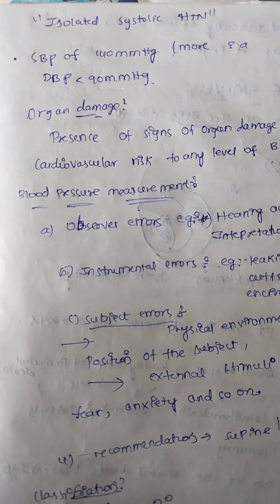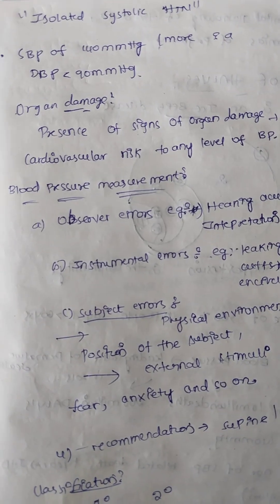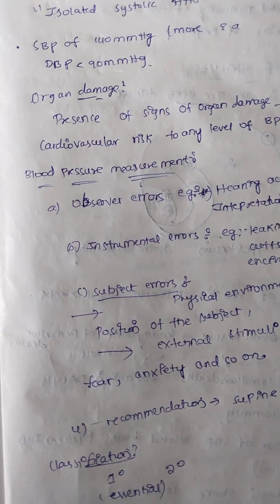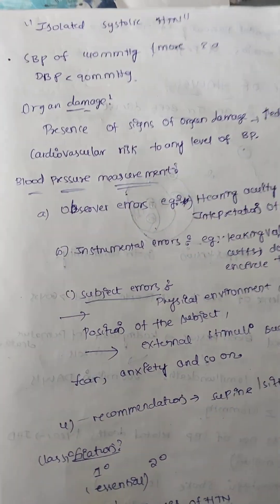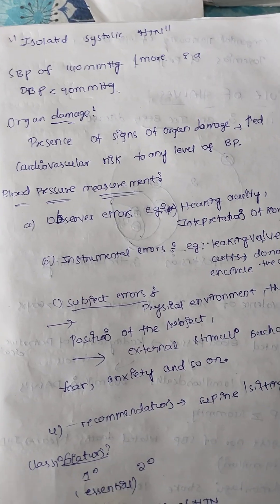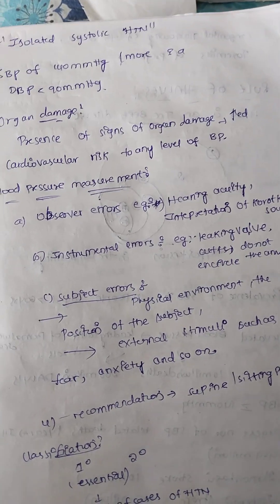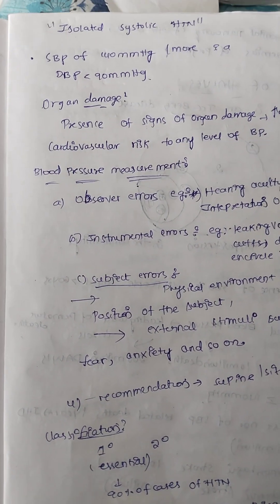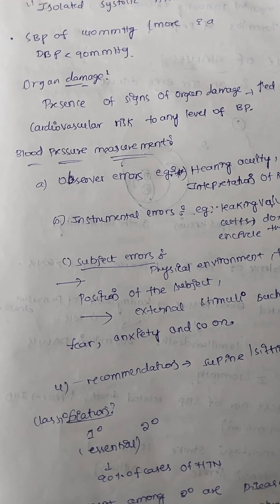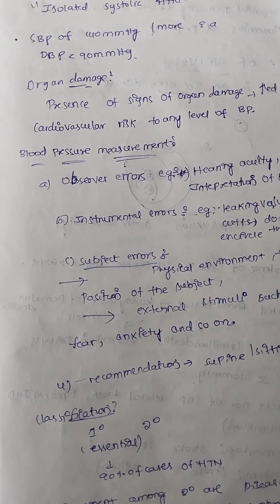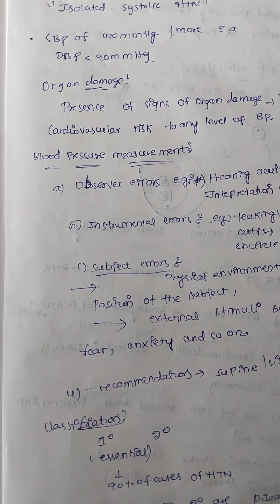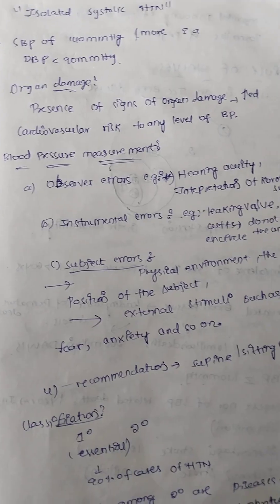Sometimes we get confused about which value to consider when both are raised. Diastolic is more sensitive than systolic. In cases where both are raised, or systolic is lower but diastolic is increasing, we consider diastolic — it is hypertension. Sometimes there is only a systolic rise, then we call it isolated systolic hypertension: systolic blood pressure 140 mmHg or more and diastolic blood pressure less than 90 mmHg.